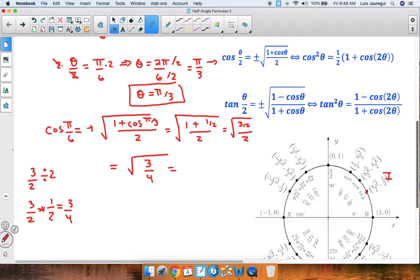Now using the properties of radicals, we can rewrite this as the square root of 3 over the square root of 4. And the square root of 3, it's an irrational number, so we'll leave it like that. And the square root of 4 is 2.